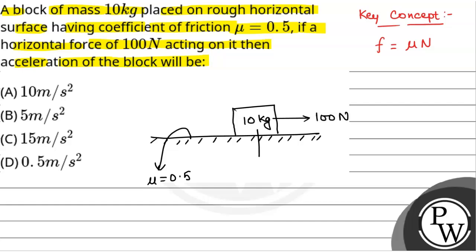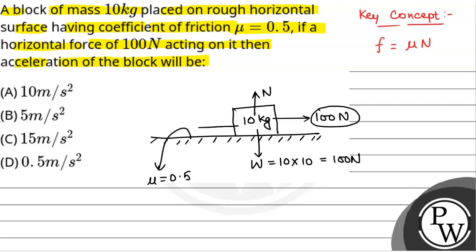We will see the forces acting on the block. The force acting downward will be 10 into G — that is the weight of the block — which is 10 into 10, equal to 100 N. In the upward direction, normal reaction will act. Since the horizontal force acts in the forward direction, frictional force will act in the opposite direction to oppose the motion. We will assume the acceleration of the block as A.